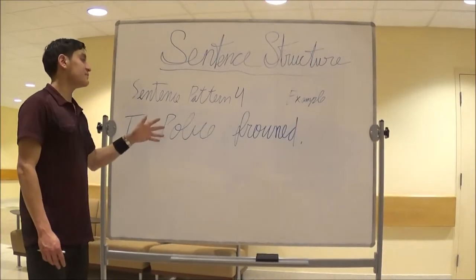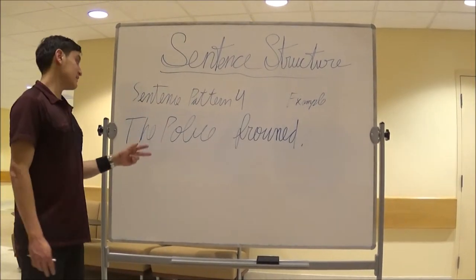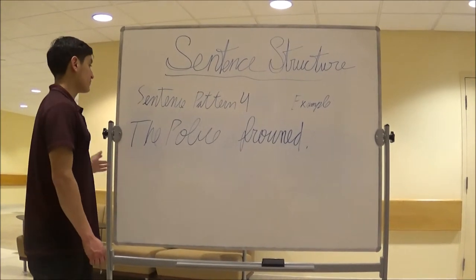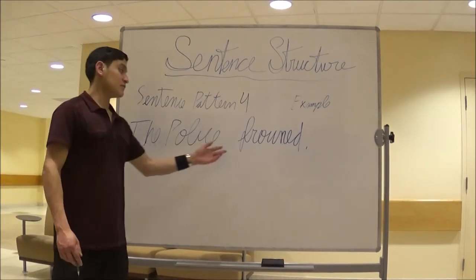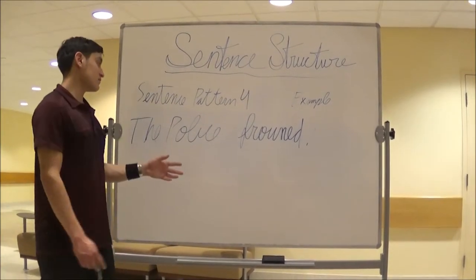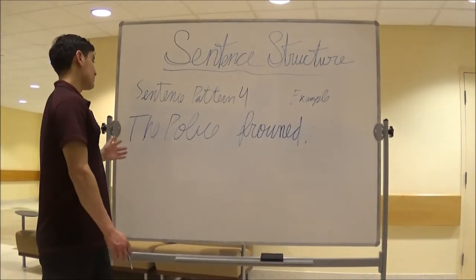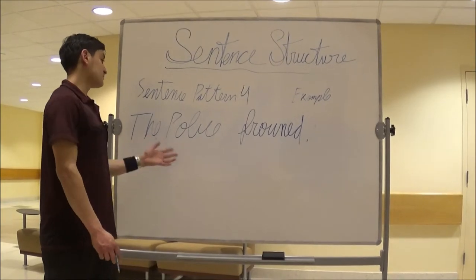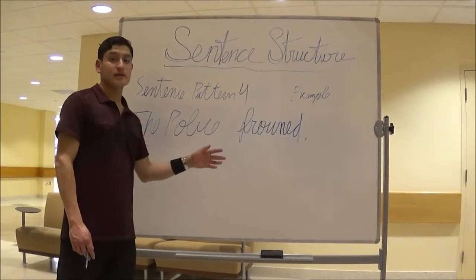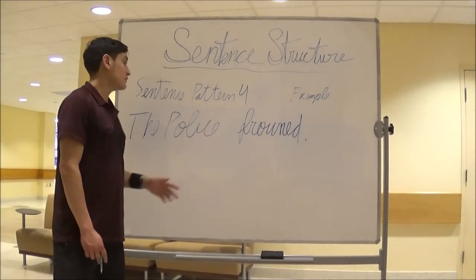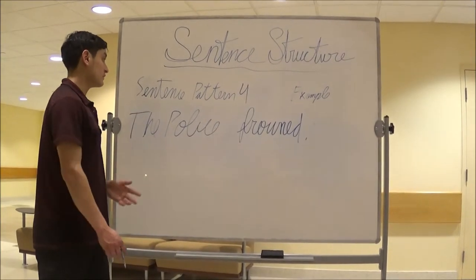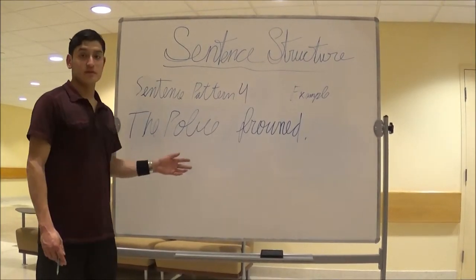Sentence pattern 4. The example is: the police frown. The verb is frown — it's the action verb — and the police is the subject. Because we have no direct object, this is simply an intransitive verb.